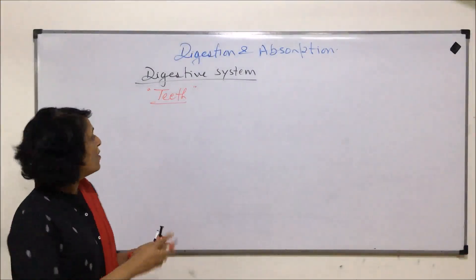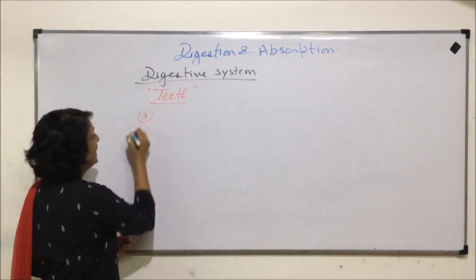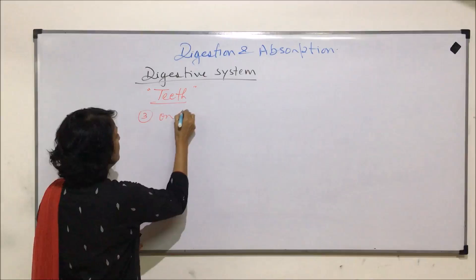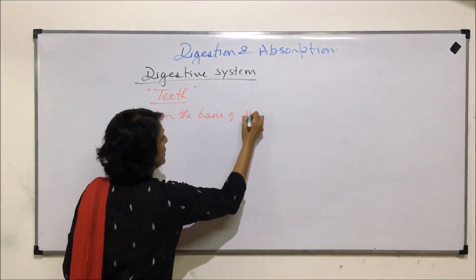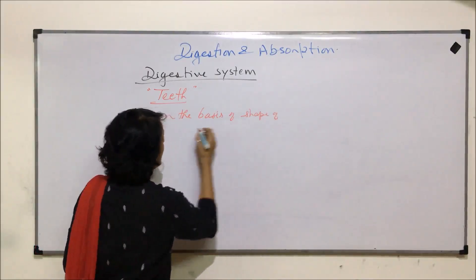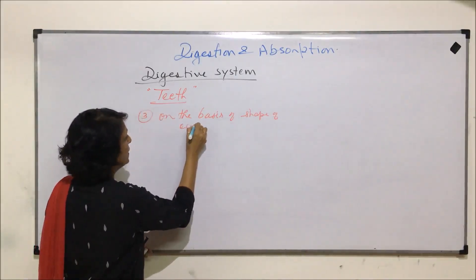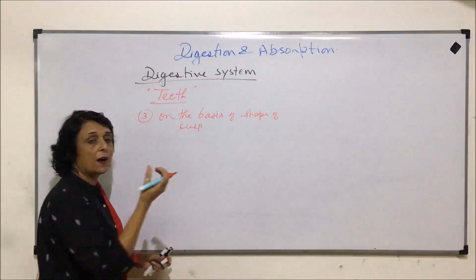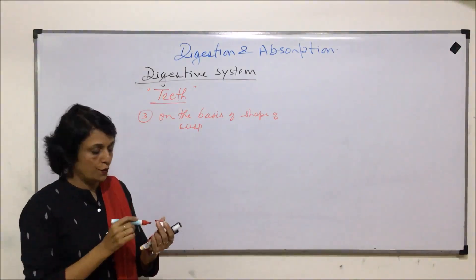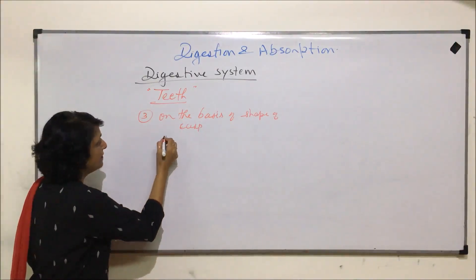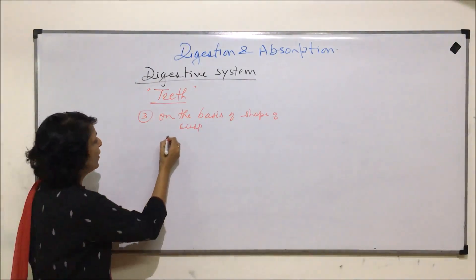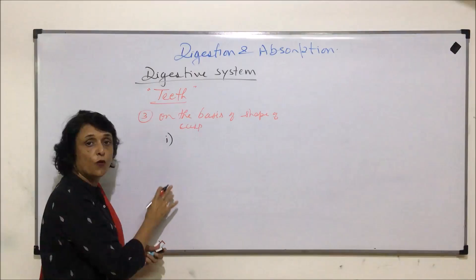The next criteria on which we are going to classify is on the basis of shape of the cusp. The cusp is the upper part of the tooth which is visible on the surface. Here we can again classify it on the basis of this into four categories.